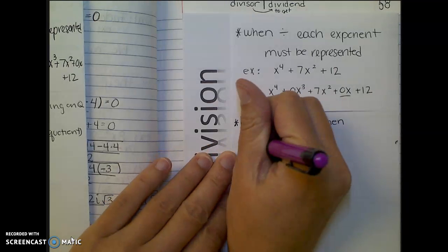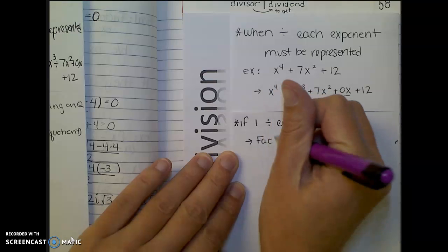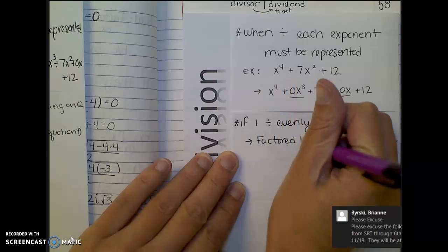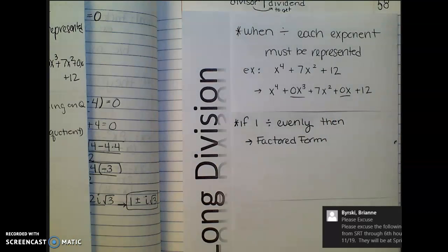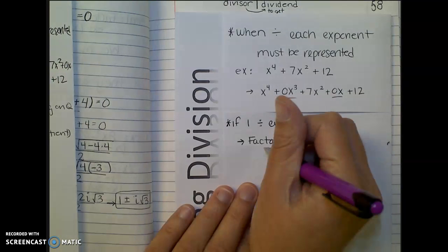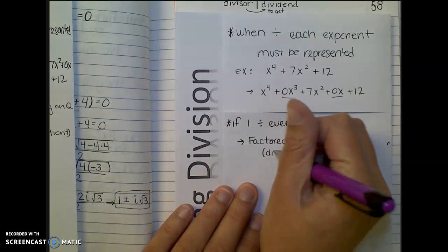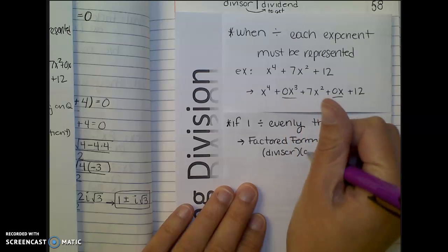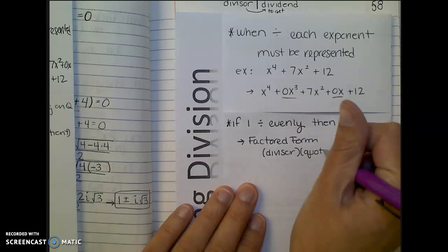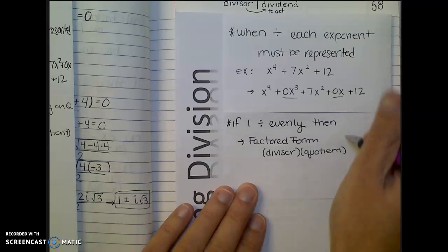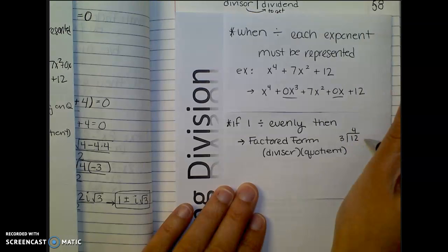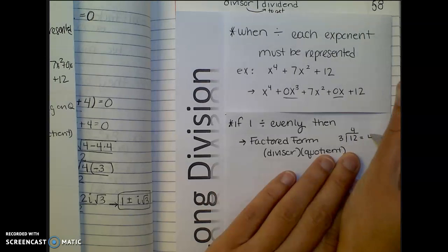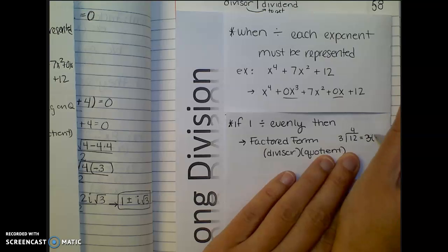Depending on what the question wants, I can either write it in factored form. And when I want to write it in factored form, I would write the divisor and then the quotient. So that's something like if I were to take 12 and divide it by 3, it's 4. And so if I'm writing 12 in factored form, then it looks like 3 times 4.